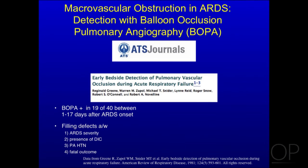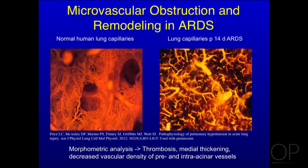Many years ago — over 30 years ago at Mass General — a group led by Warren Sappol was studying the pulmonary macrocirculation. They did angiograms in patients with pulmonary arterial catheters, wedged the catheter and injected dye, and identified macrovascular obstruction in about half of their patients. It was associated with severity of ARDS, presence of DIC, pulmonary hypertension, and a poor outcome. They also did well-done studies on patients who died and found obliteration of lung capillaries with thrombosis, medial thickening, and decreased vascular density.